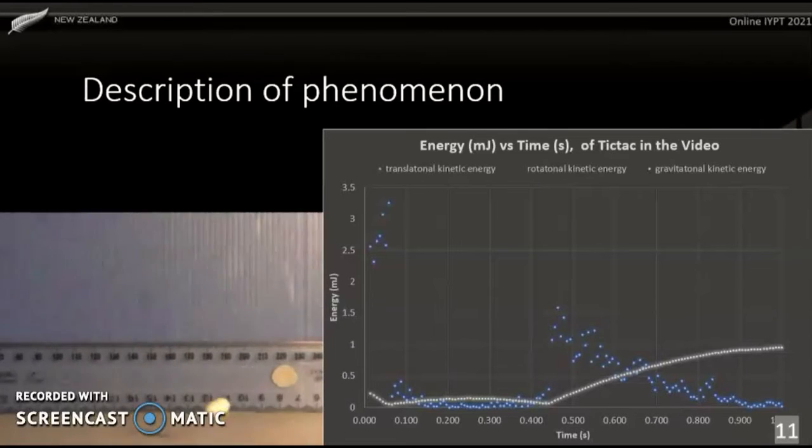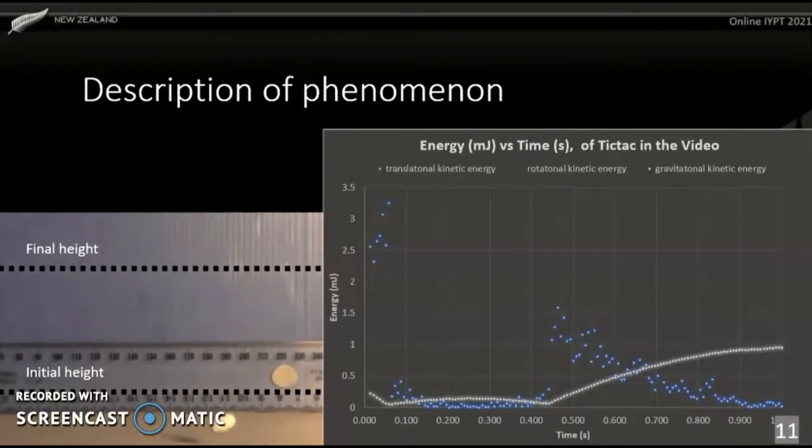This is a video captured at 1000 frames a second of the tic-tac's motion when the phenomenon is observed. Looking at the energy graph of this tic-tac, we can see that it starts with a large amount of translational kinetic energy, which, at the moment of the first collision, suddenly drops down. The remaining kinetic energy then transfers into gravitational potential and back into translational kinetic energy as it accelerates downwards. Then on the next collision, it gains a bunch of translational kinetic energy, which again converts into gravitational potential energy, and therefore height.